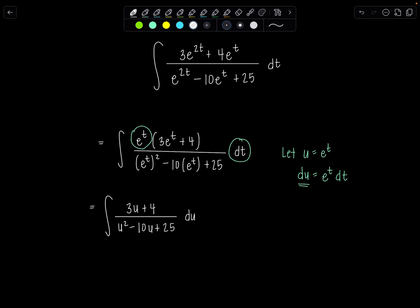And then from here, I'm looking—okay, degree of the denominator is already higher than the degree of the numerator, so I can go ahead and try to find the partial fraction decomposition. At first glance, indeed I can notice that the denominator factors into u minus 5 quantity squared.